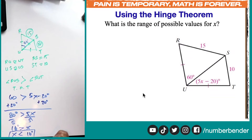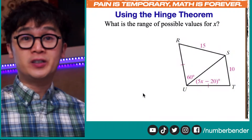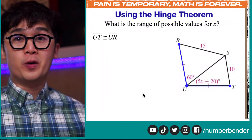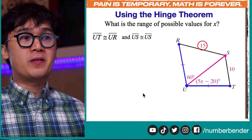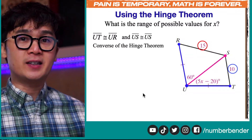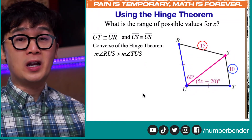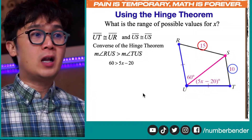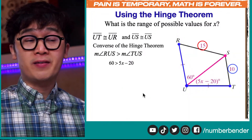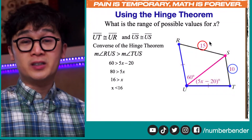The second part is to find the lower limit of X. Angle TUS, expressed as 5X minus 20, cannot be a negative angle. So we write angle TUS greater than zero, meaning 5X minus 20 greater than zero. Adding 20 to both sides gives 5X greater than 20, and dividing by 5 gives X greater than 4. So the range of X is X greater than 4 and X less than 16.